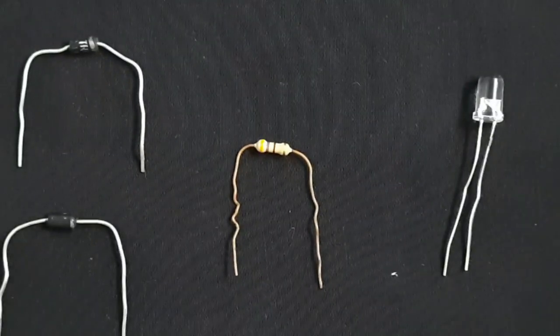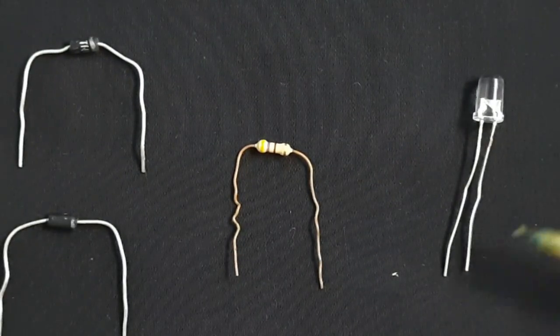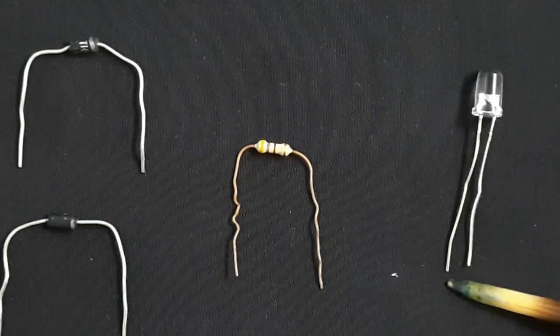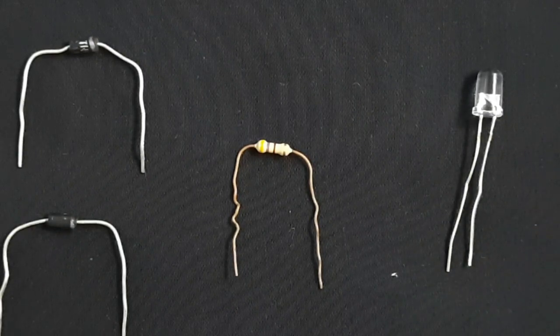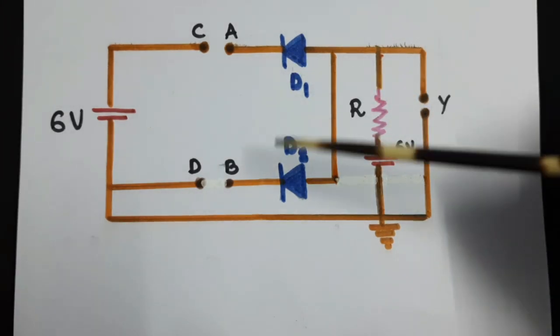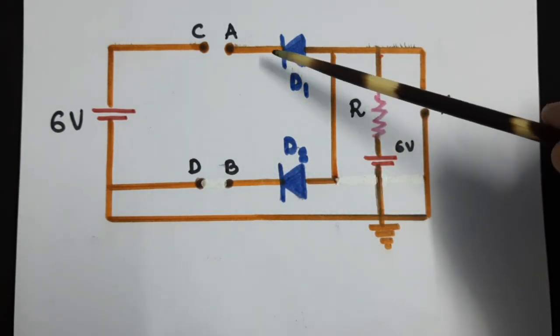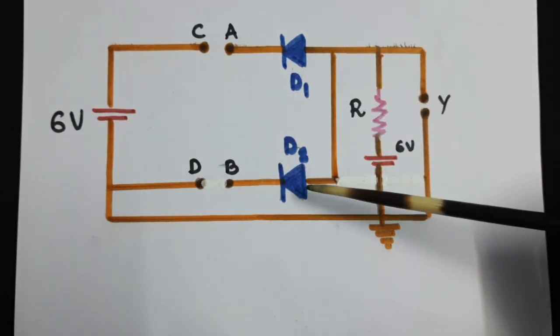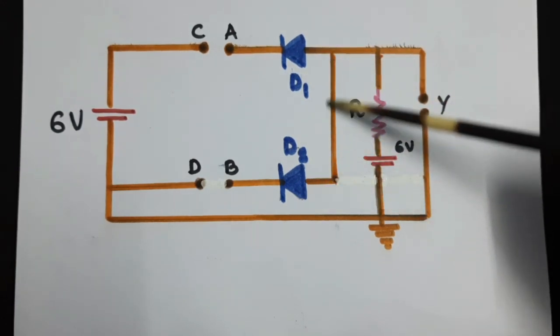The other component is the LED. The longer leg of the LED is the positive terminal. As in the circuit, we will first place the two diodes with the negative terminal on the left-hand side and connect the two positive terminals with a single wire.